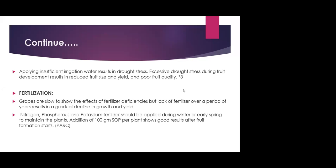Fertilization is important — if we do not fertilize adequately, it will affect growth and yield. Nitrogen, phosphorus and potassium fertilizers are applied in winter or early spring to maintain growth. According to PARC, if we add 100 grams of SOP per plant, fruit formation starts.